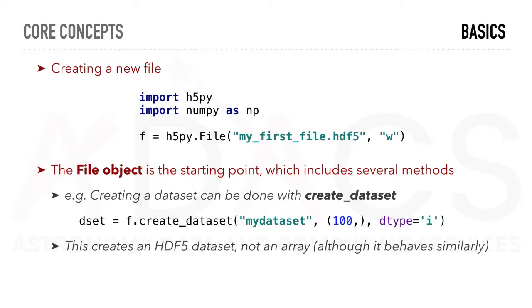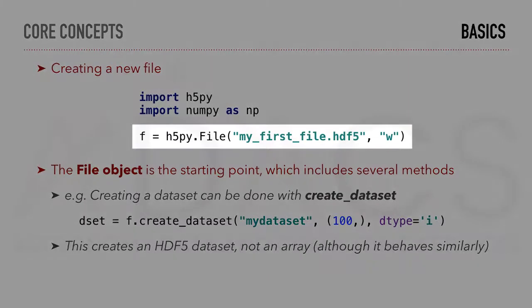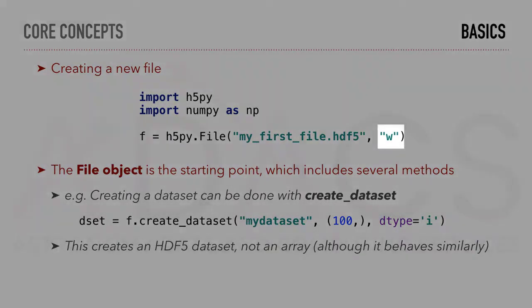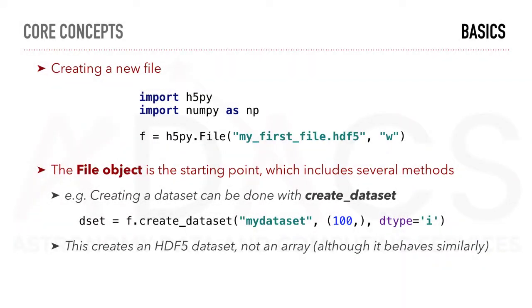In the following examples, we assume that the h5py and NumPy modules have been imported. Creating a new file with h5py is done by simply calling the file constructor with a filename and an opening mode. We will cover the different opening modes later, but here we can see that we can use the W for write to create a new file.